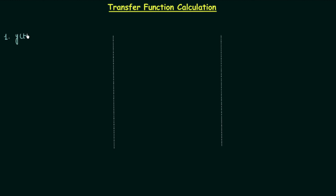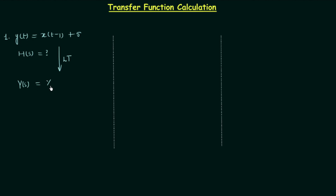In this problem, y(t) is equal to x(t−1) plus 5. This is the system relationship and we are required to calculate the transfer function H(s). To calculate the transfer function we need to take the Laplace transform of the system relationship. After taking the Laplace transform we will have Y(s) equal to X(s) multiplied by e raised to power minus s. The Laplace transform of x(t−1) is X(s)·e^(−s).